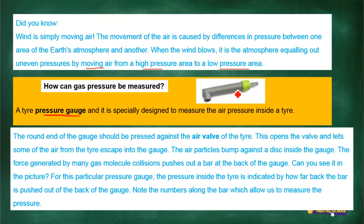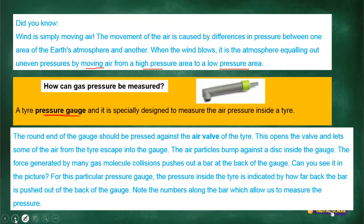The pressure inside the tire is indicated by how far back the bar is pushed — this tells you how much pressure is inside the tire. In most cars the pressure should be 2.2. If it's less, the petrol attendant pumps in more pressure so you can have a smoother, safer ride. Testing your tire pressure and maintaining the correct amount also increases the life of your tires.